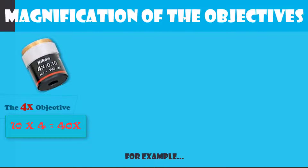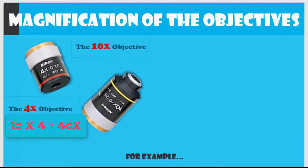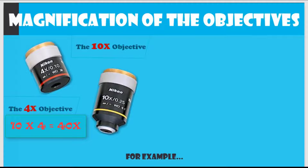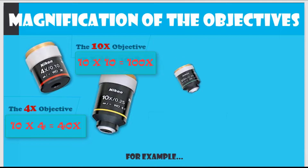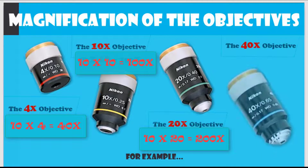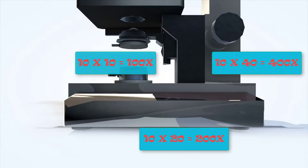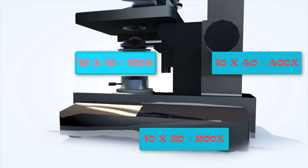For example, using your 4x objective, your specimen will appear 40 times larger than with the naked eye. Using the 10x objective, your specimen appears 100 times larger. A specimen appears 200 times larger if you are using the 20x objective, and 400 times larger if you are using the 40x objective.